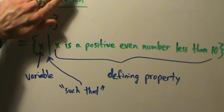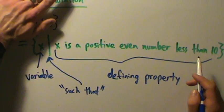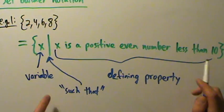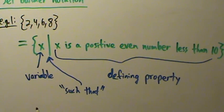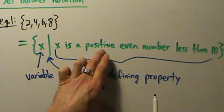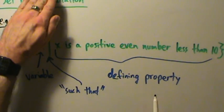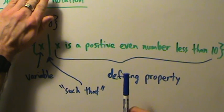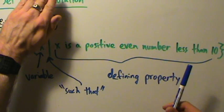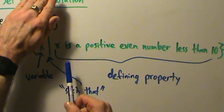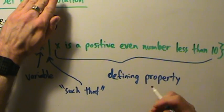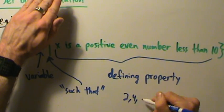Think about what all the positive even numbers less than 10 are. Zero is even but not positive, so we exclude it. Anything less than zero is negative, so those are out too. The first positive even number is 2, then 4, then 6, then 8. The next would be 10, but 10 is not less than 10. So we get exactly {2, 4, 6, 8} — identical to the set on the left.